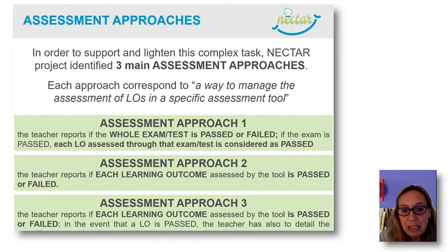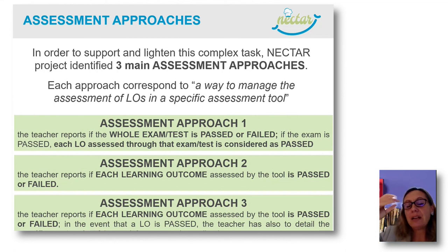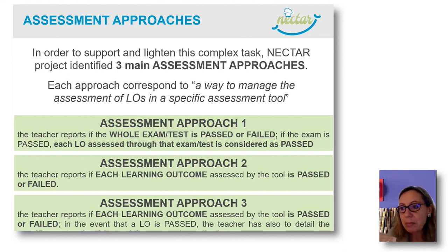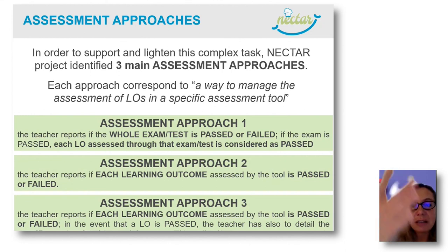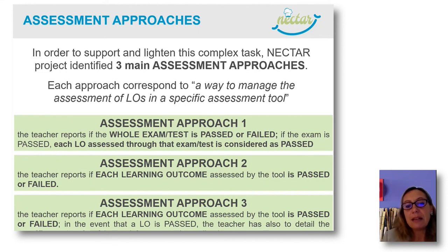Assessment approach two is set at the level of each learning outcome. The teacher reports whether each learning outcome assessed by the specific tool is passed or failed. This is useful, for instance, at the level of work-based learning. If you have a list of skills that should be mastered by a student after a work-based learning experience — a sort of checklist — you can check passed or not passed, learning outcome by learning outcome, after an examination, a simulation, or a conversation with the tutor.